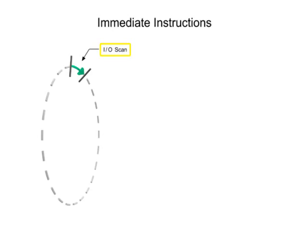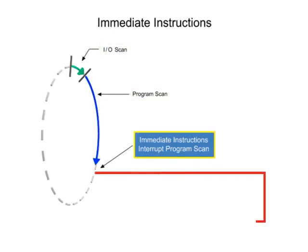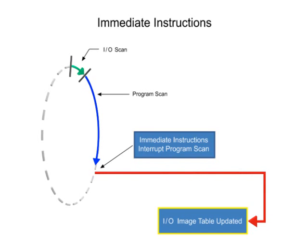For time-critical applications, immediate input and immediate output instructions are used to interrupt the normal program scan to update the current input or output image table.